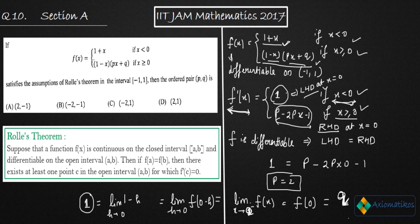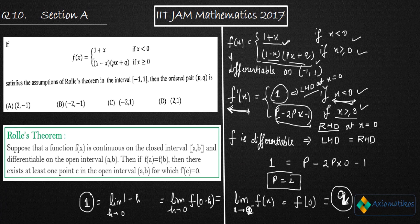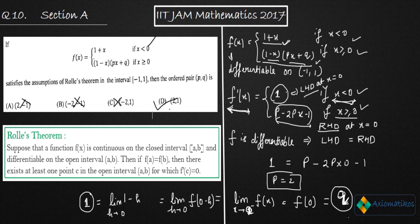We have proved that q is 1 and p is 2, so the ordered pair is (2, 1). Option A is incorrect, option B is also incorrect, option C is also incorrect — so option D must be correct. We used two properties from Rolle's theorem: f should be differentiable and f should be continuous. By continuity we evaluated q, and by differentiability we evaluated p. This is a two-minute question you can do in the exam.